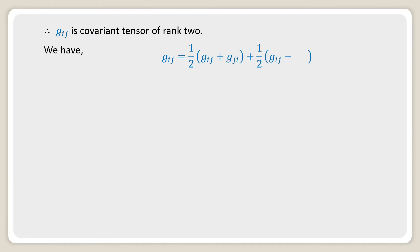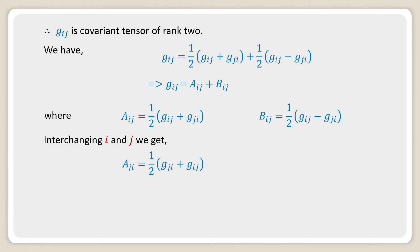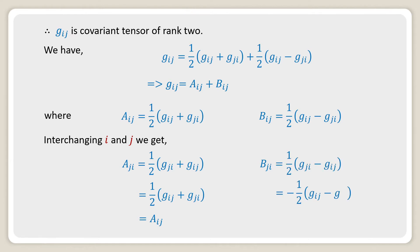We have g_ij = ½(g_ij + g_ji) + ½(g_ij − g_ji), which implies g_ij can be written as A_ij + B_ij, where A_ij = ½(g_ij + g_ji) and B_ij = ½(g_ij − g_ji).